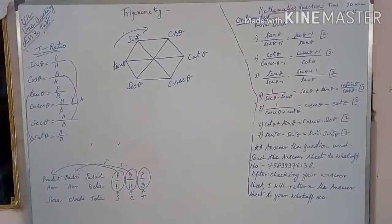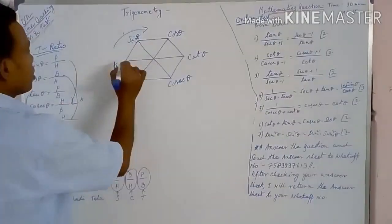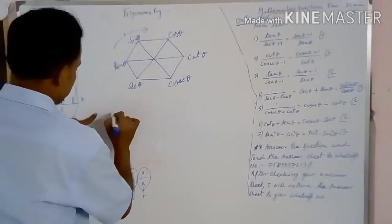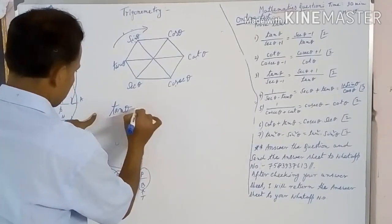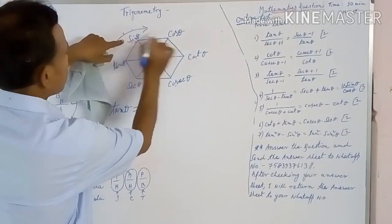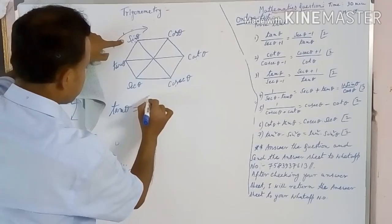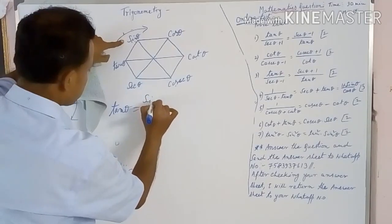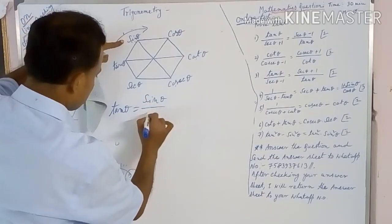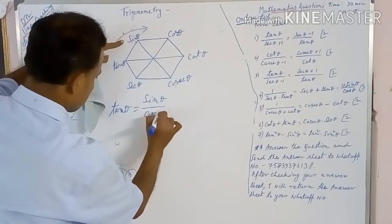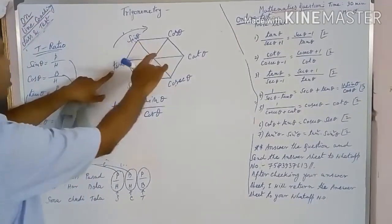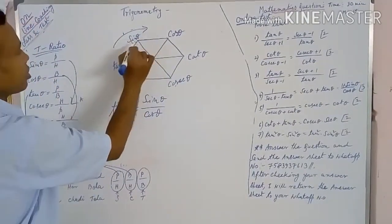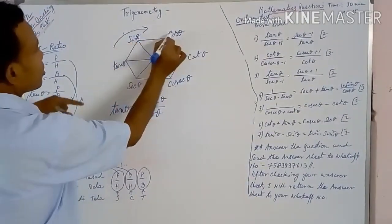Using the same hexagon, moving in the clockwise direction, tan theta is equal to sin theta by cos theta. So this is tan theta — move in the forward clockwise direction — sin theta by cos theta.